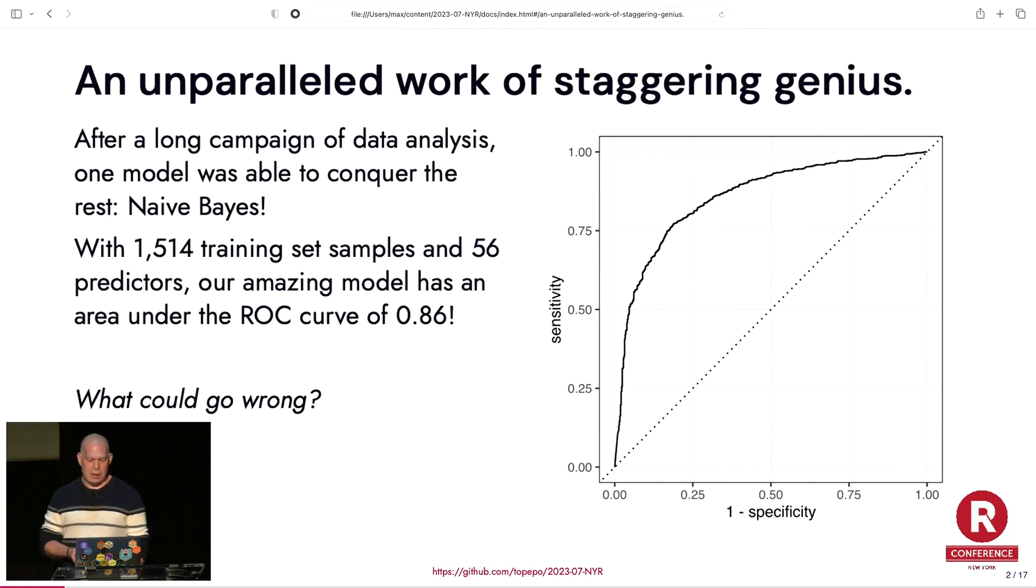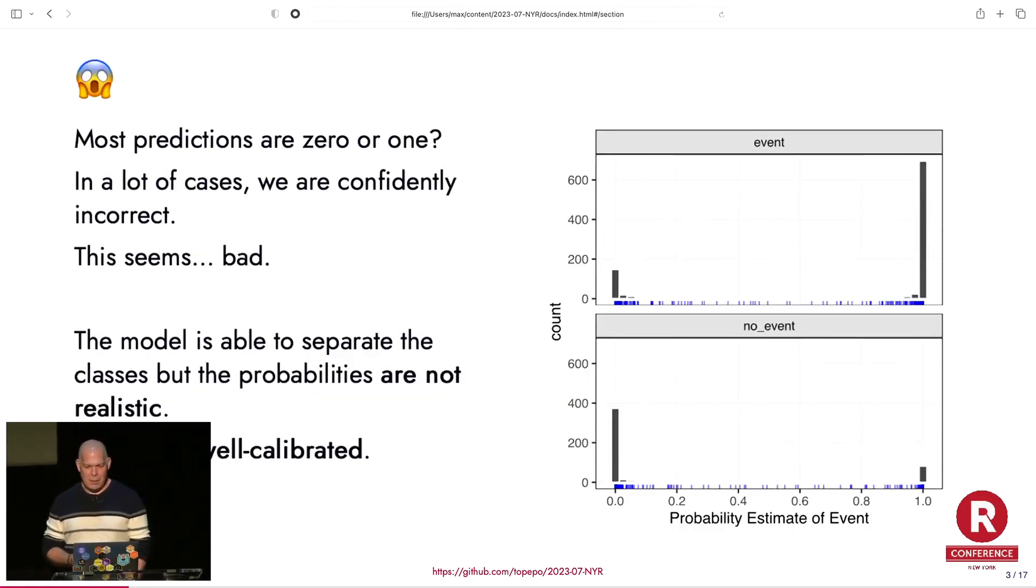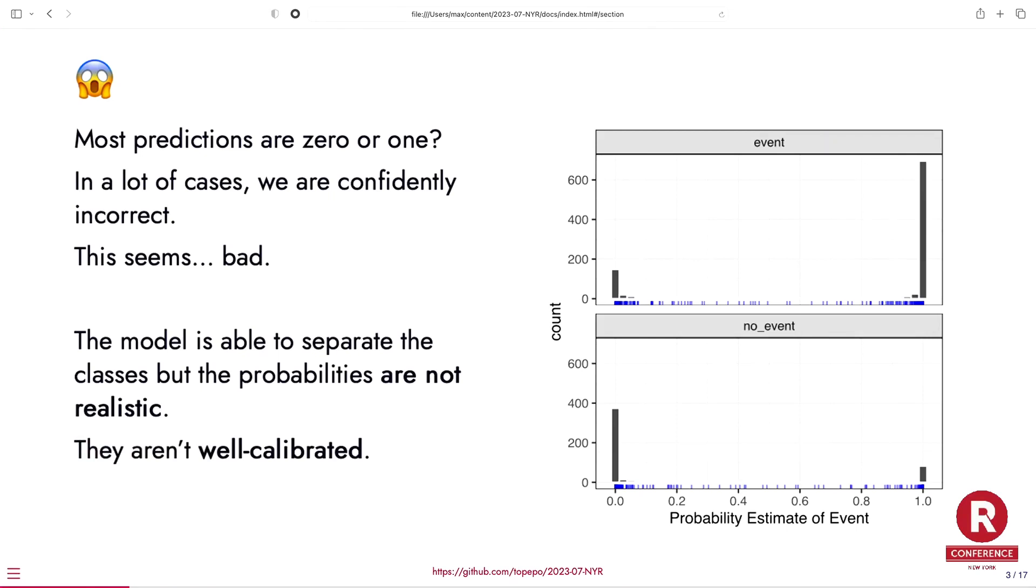In this particular data set, it was like 1,500 data points and 56 predictors, and a model that seemed to work pretty well was something called a naive Bayes model. And it had an area under the ROC curve of 0.86, and there it is right there. So you think, oh yeah, this is really awesome. It's great. But a college professor of mine told me that the only way to be comfortable with your data is never to look at it. So then you start plotting things.